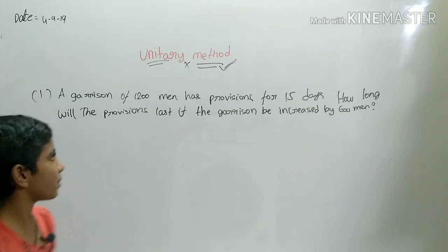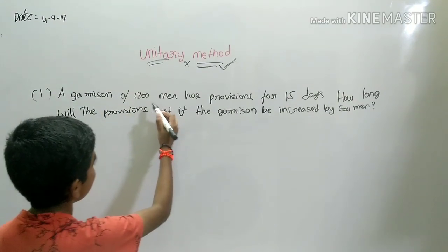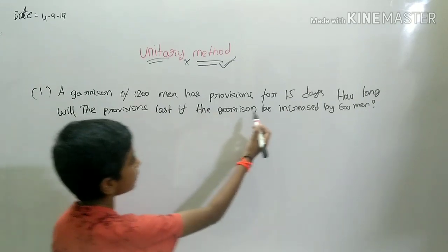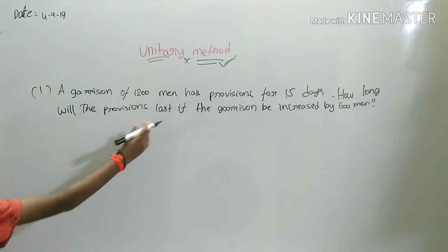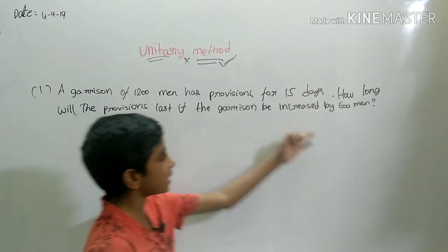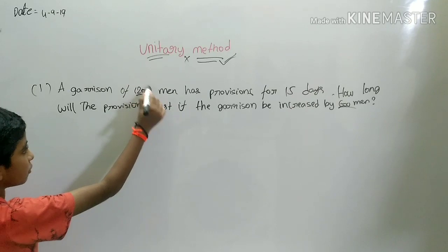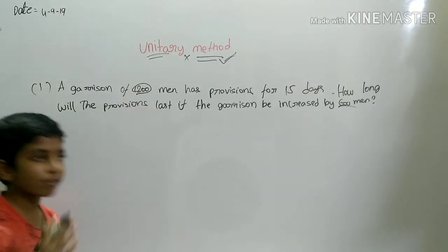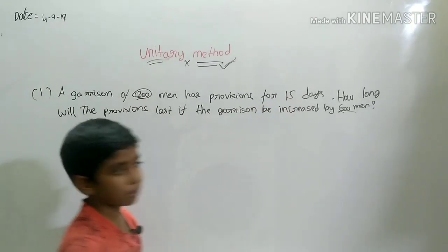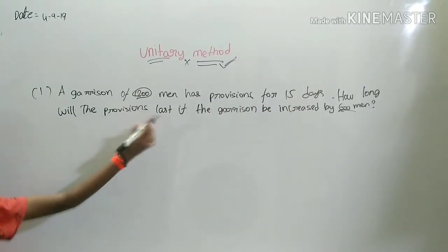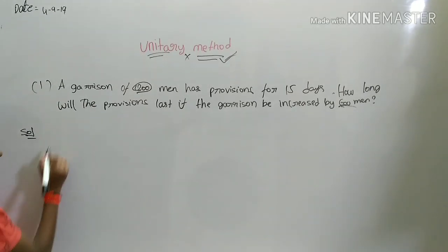Next problem: a garrison of 1200 men has provisions for 15 days. How long will the provisions last if the garrison is increased by 600 men? First they have 1200 men, then after increase it becomes 1200 plus 600 equals 1800 men with 15 days of provisions.